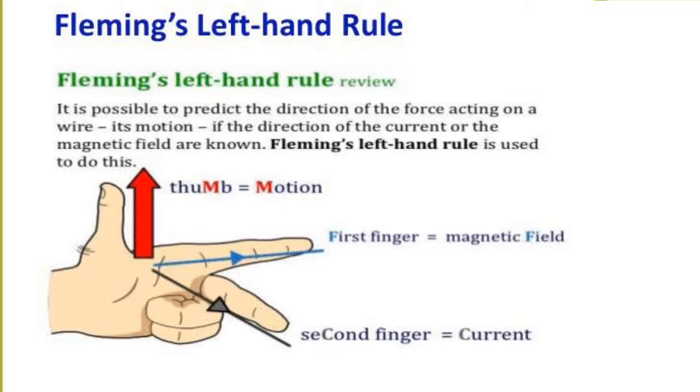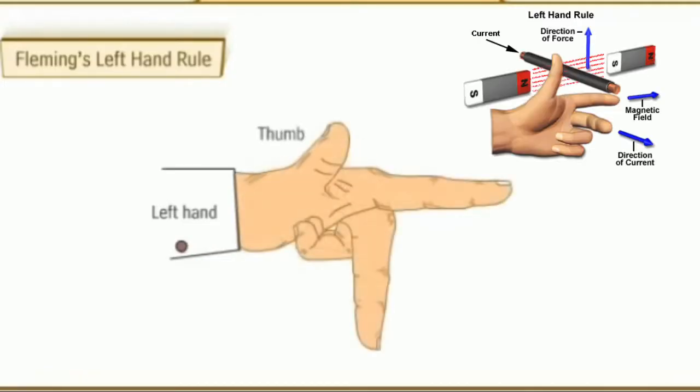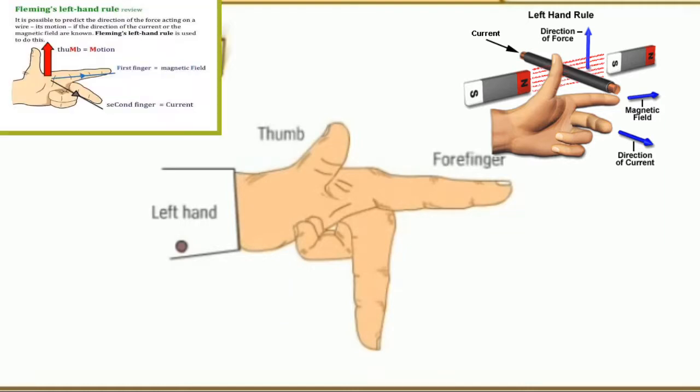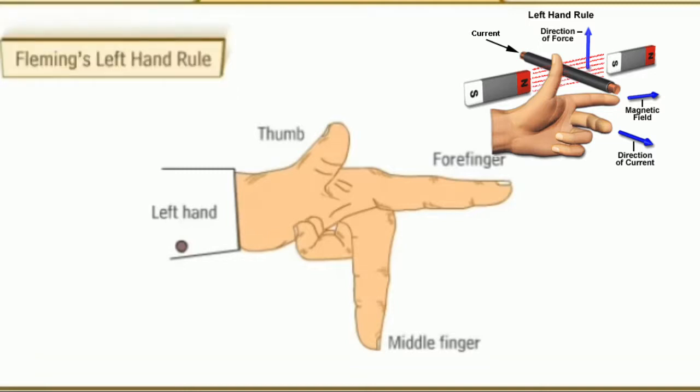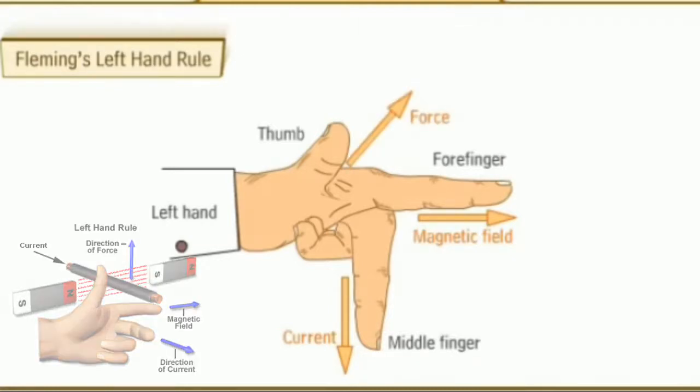The direction of motion is given by Fleming's left-hand rule. Extend the thumb, forefinger and middle finger on the left hand so that all three are mutually perpendicular to each other. If the forefinger points in the direction of the magnetic field, the middle finger in the direction of the current, then the thumb points in the direction of the force exerted on the conductor.